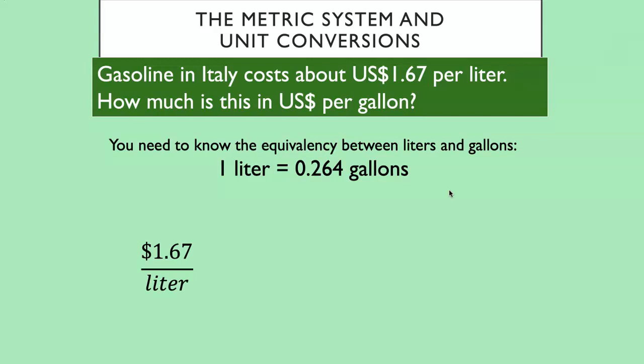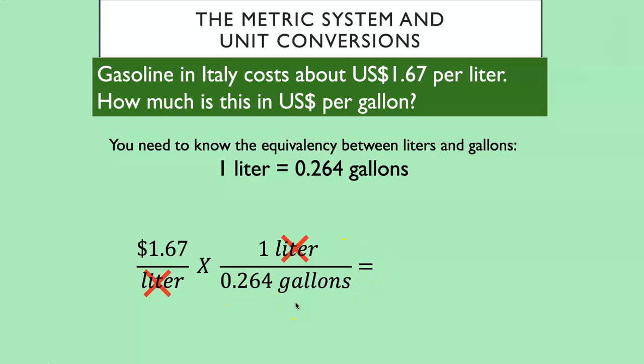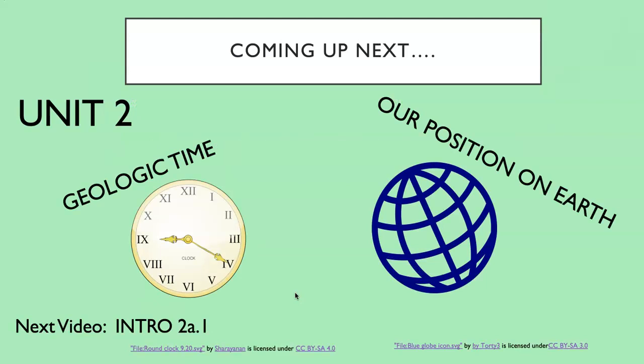You're going to take what you know, $1.67 US dollars per liter. And you're going to multiply it by something that removes liters and gets gallons in there instead. And that's going to be this. One liter is equivalent to 0.264 gallons. Your liters are going to cancel out, right? One's on the numerator, one's on the denominator. And you're going to end up with an answer with dollars per gallons. And it turns out to be $6.33 a gallon for gas in Italy right now. Coming up next week, Unit 2, Geologic Time and our Position on Earth.